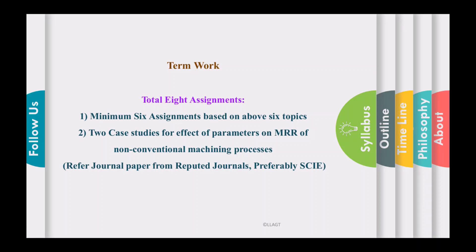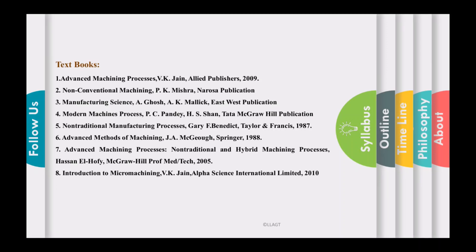For the term work part of this course, you will have a total of eight assignments: six assignments based on the six topics above, and two case studies. The two case studies will be on the effect of process parameters on MRR of a non-conventional machining process. You can take any two processes and study the effect of process parameters on MRR. For these case studies you should refer to research papers from reputed journals, such as SCI or SCIE indexed journals.